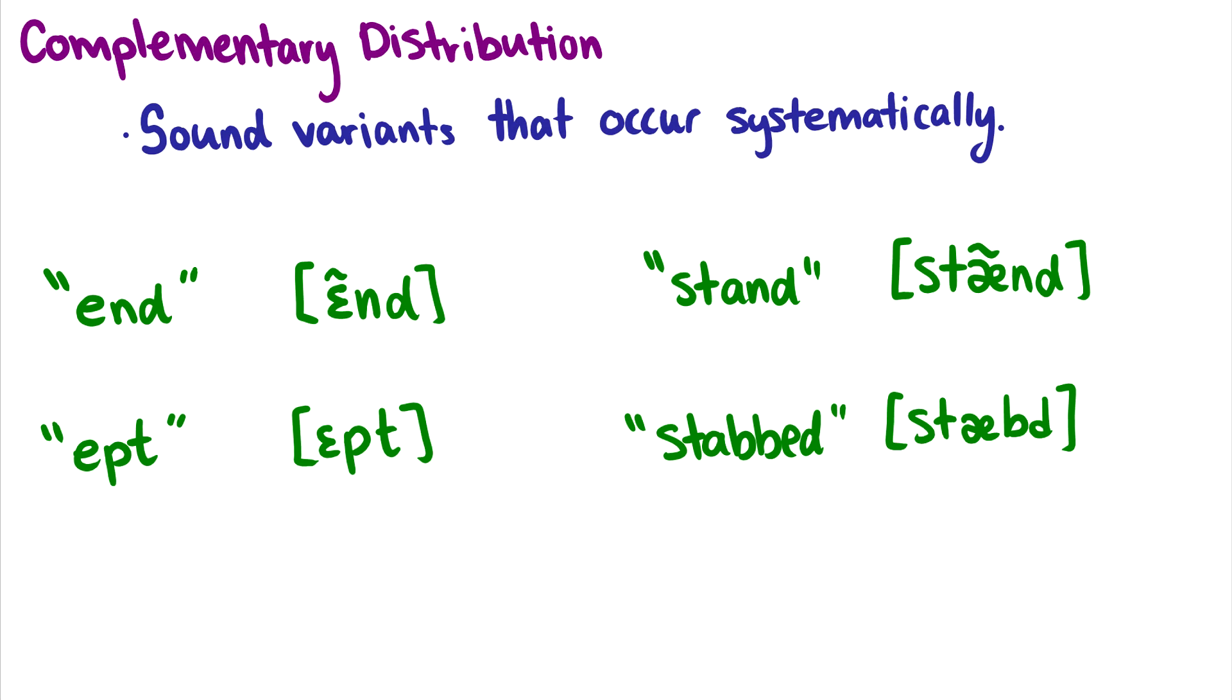For instance, I have a word like end and ept. Now the thing about the first vowel in the word end and the word ept is that the vowels are pronounced differently. See, in English, in the word end, air goes through the nasal cavity. So it's a nasalized vowel. But in the word ept, air does not go through the nasal cavity. It is just an oral vowel.